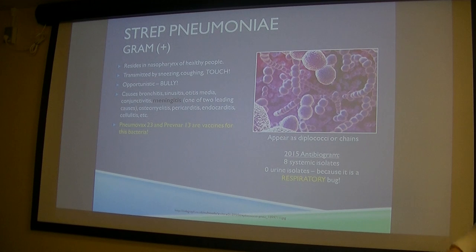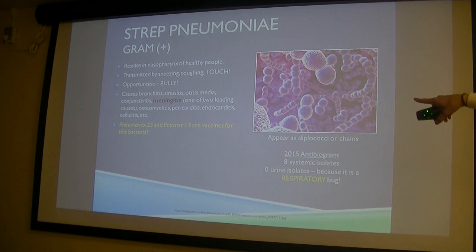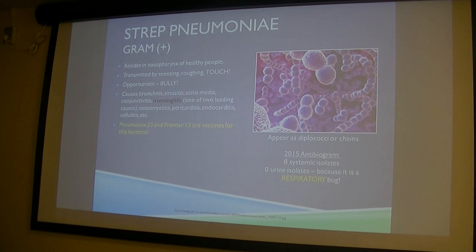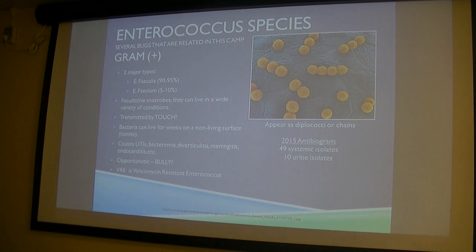If I got a UTI result that says Strep pneumoniae, I'd need to question the process. Strep pneumoniae is what the Pneumovax and Prevnar vaccines are for — the '23' and '13' in the vaccine names indicate the number of serotypes they're effective against. We'll talk more about vaccines in the last session.